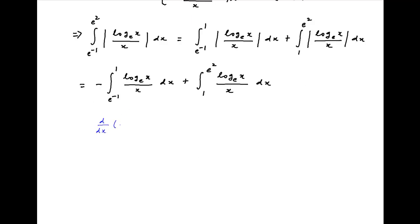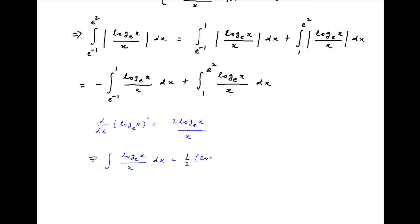Now note that the derivative of ln x whole square is equal to 2 times ln x upon x. Taking the integral of both sides with respect to x, we get that the integral of ln x upon x dx is equal to half of ln x whole square plus the constant of integration.